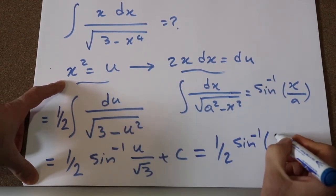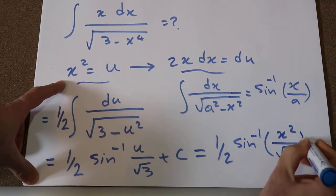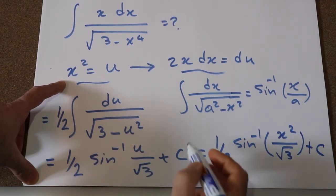Instead of u, I write x squared divided by square root of 3, plus C, which is the constant of the integral.